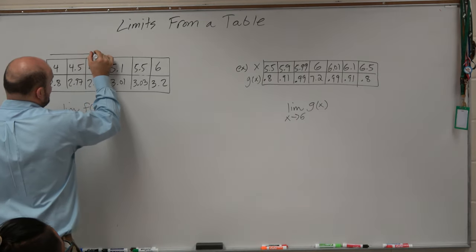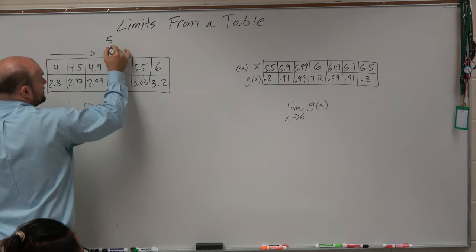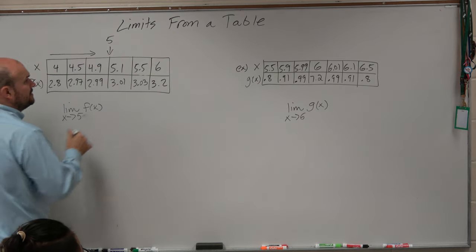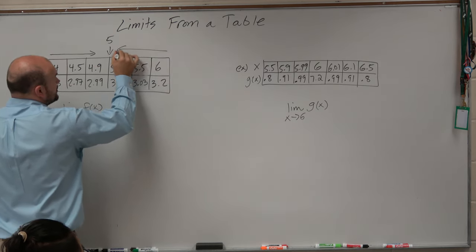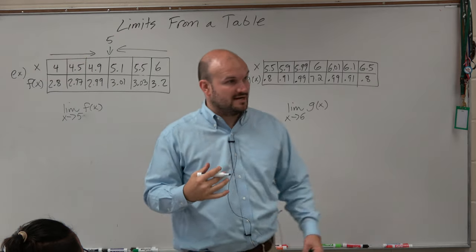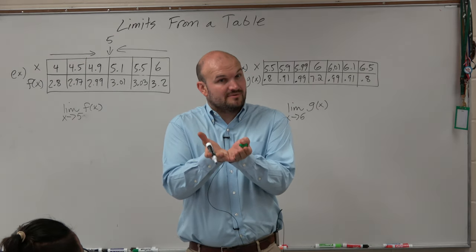As x gets closer and closer to 5, we know 5 is right here—it's not in the table, but we know it's there. We want to see what the graph is approaching from the right-hand side and look at the values that it's approaching.